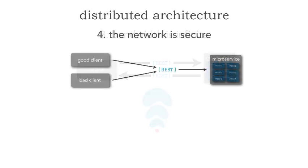Number four is the assumption we make that the network is secure — fallacy number four. In fact, it is not. Just because we're behind the firewall does not mean we have a secure network. I have really no idea who's calling me, and I don't want a bad client calling me either. This means we need proper authorization and authentication, and we need to secure every endpoint to and from our services.